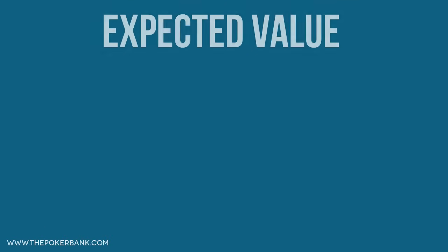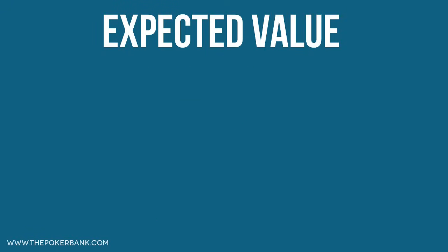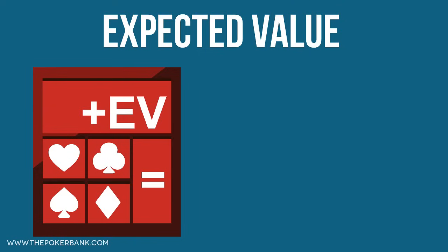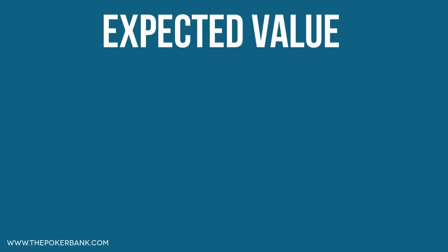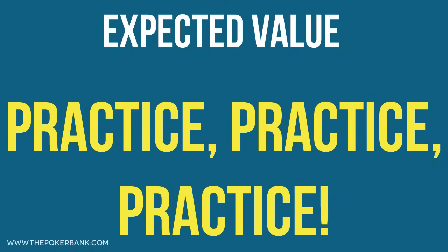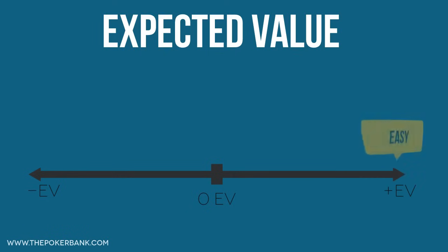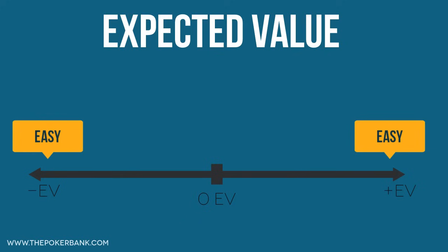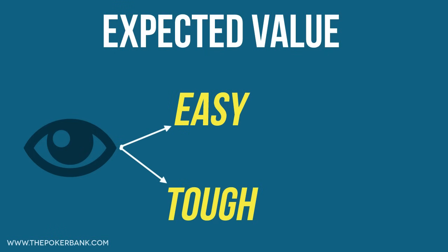In real time you won't be able to pull out an equity calculator, plug everything into an EV formula, and solve. But constant practice with solving EV, estimating your equities against various ranges, and simple shortcuts will help you closely eyeball the EV of a play in real time. When you have lots of available time while studying, calculate the EV of your plays so it becomes second nature. Easy decisions in poker are blatantly plus EV or negative EV, but difficult spots are tricky because they're closer to zero EV — just a small change in your opponent's range can shift a play from negative EV to plus EV.